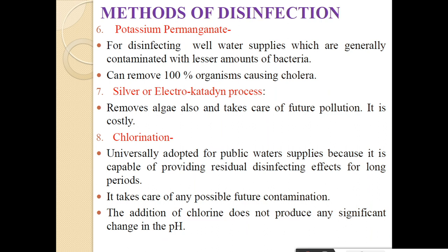Next one is potassium permanganate. For disinfecting well water supplies which are generally contaminated with a lesser amount of bacteria, potassium permanganate is used for disinfection purpose. The advantage is that potassium permanganate can remove 100% of organisms causing cholera. This potassium permanganate is mostly used in rural water supply schemes where the source of water is well water. In that case, water is transmitted from the well up to the ESR, that is elevated service reservoir, and we add potassium permanganate into the water, disinfect it, and then supply that water to the people.